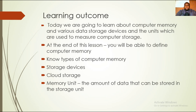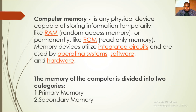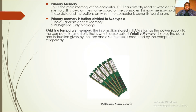Computer memory is any physical device capable of storing information temporarily, like RAM (Random Access Memory), or permanently, like ROM (Read Only Memory). Memory devices utilize integrated circuits and are used by operating systems, software, and hardware. The memory of the computer is divided into two categories: the primary memory and the secondary memory.